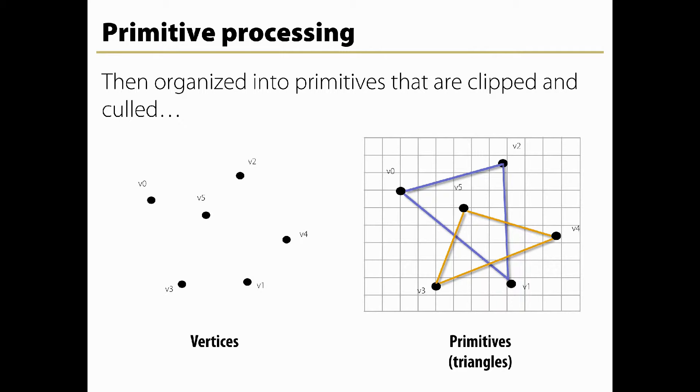If tessellation or geometry shaders are active, then a limited form of primitive assembly is executed before these vertex processing stages. This is used to feed those particular shader stages with individual primitives rather than a sequence of vertices. The rendering pipeline can also be aborted at this stage, allowing the use of transform feedback operations without having to actually render something.